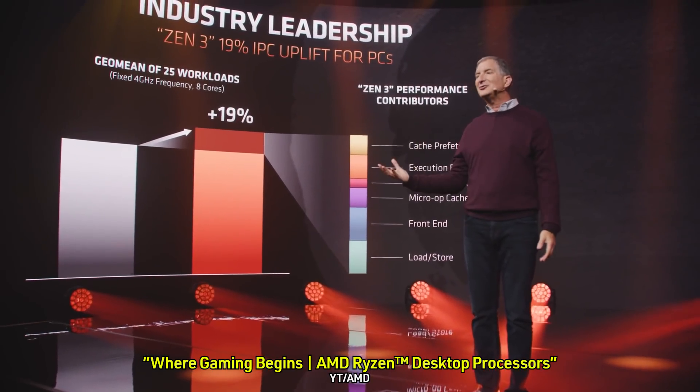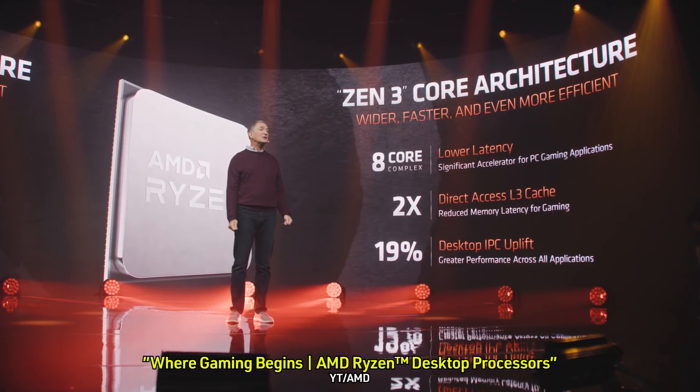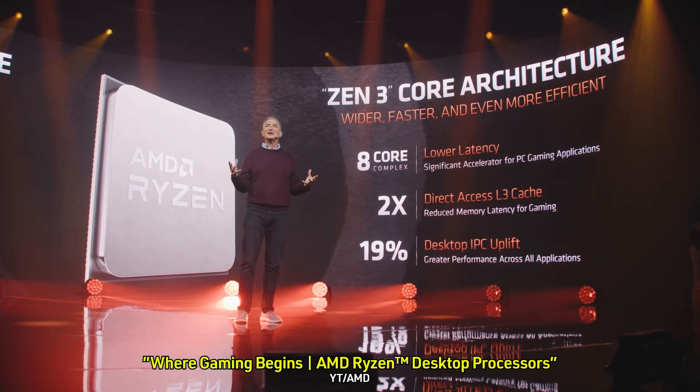They're having significant IPC uplift — that's instructions per clock, the amount of instructions that can be handled at the same clock speed. There's going to be the fanboy argument every time: Intel has higher clocks, but AMD has more instructions per clock. It's not directly comparable. The 10900K has up to 5.3GHz single-thread versus up to 4.9GHz on the 5950x. The actual IPC difference between them is very significant — meaning that 4.9GHz is going to perform like a much faster clock. The IPC uplift we're seeing is about 19% on the 5900x.